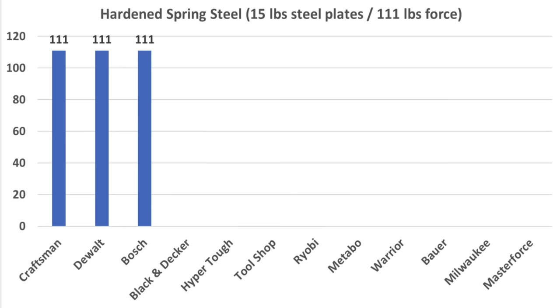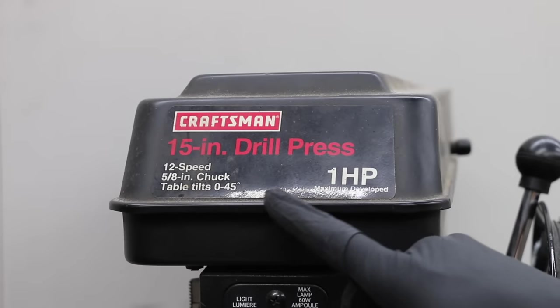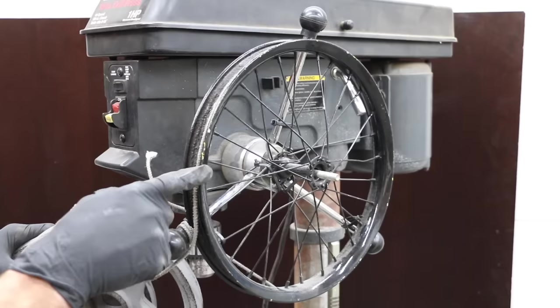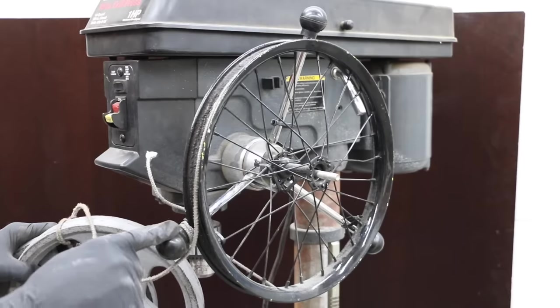The only three twist drills that were able to cut through the spring steel with approximately 111 pounds of downward force were the Craftsman, DeWalt, and Bosch. Some of the other brands were able to make very quick work of the spring steel, but required a lot more pressure or force. You'll probably find the next test helpful if you're looking for an affordable set of twist drills for a drill press or a tool that offers a lot of leverage.